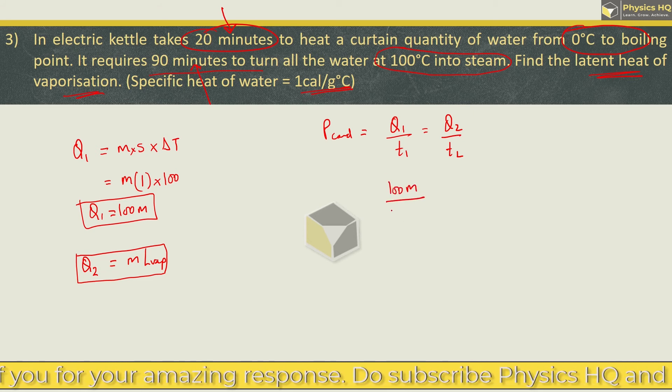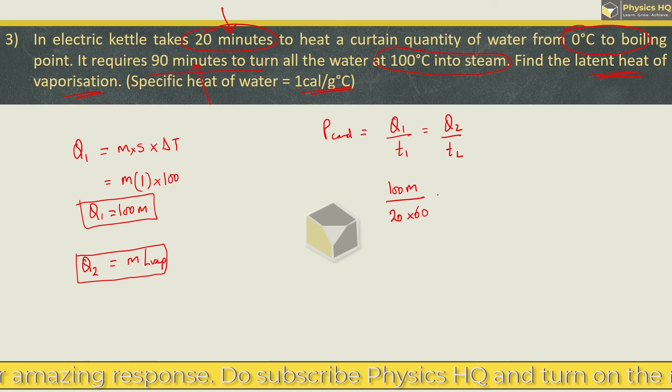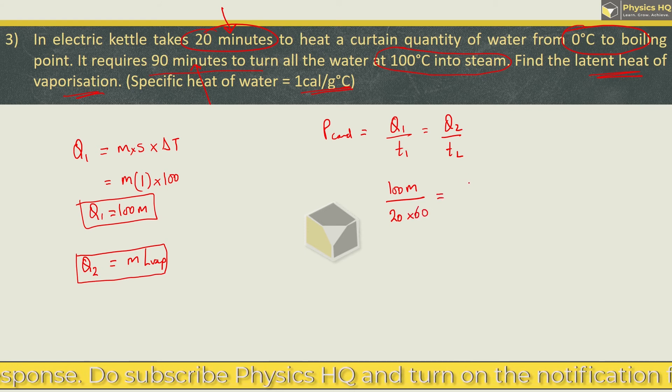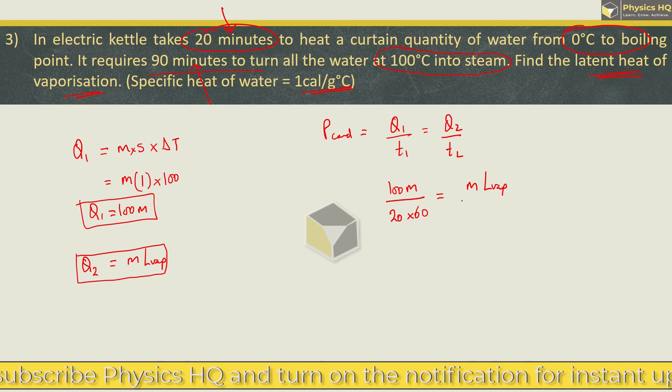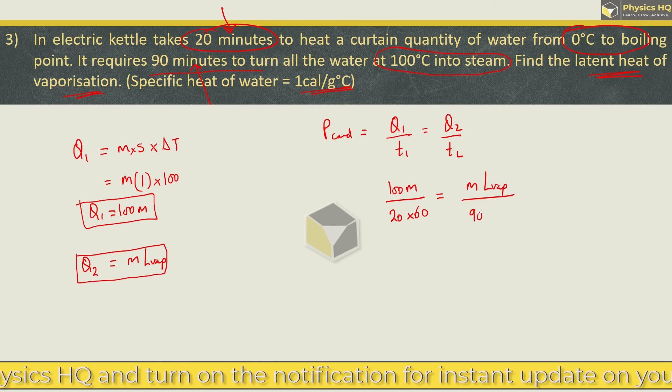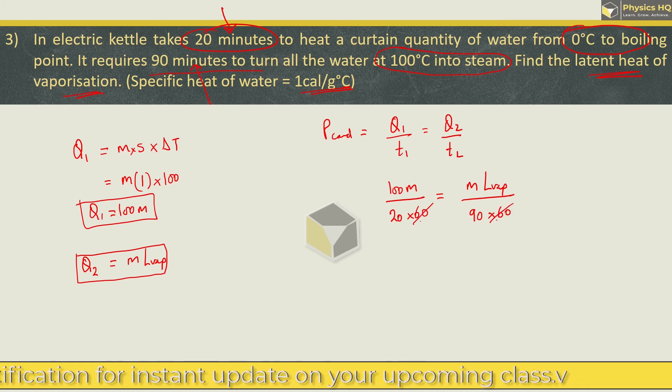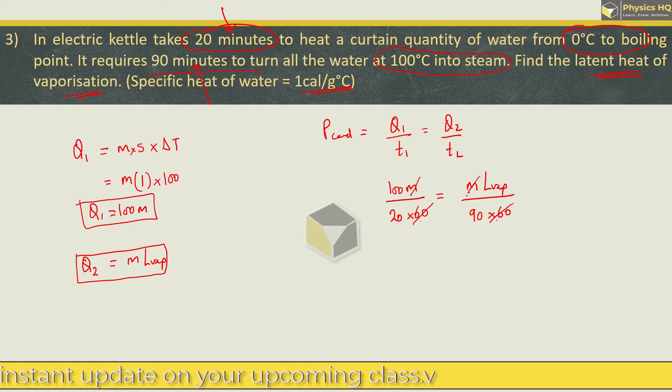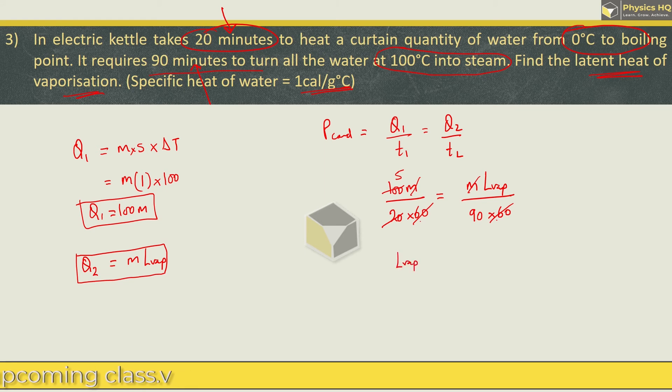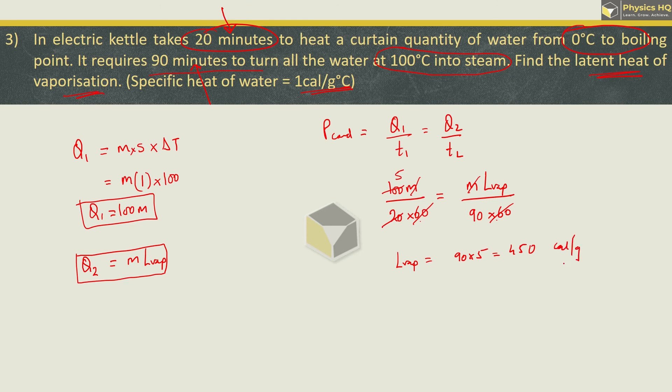Q1 we got as 100 into m, time is 20 minutes, converting to seconds by multiplying by 60. Similarly Q2 we got m into latent heat of vaporization divided by 90 minutes into 60. So we get latent heat of vaporization as 90 into 5 which is 450 calorie per gram. One gram of water to convert into steam at 100 degree Celsius requires 450 calorie heat. I hope you understood this sum.